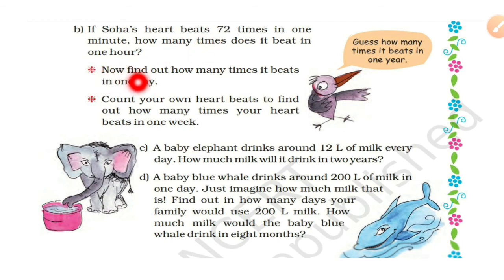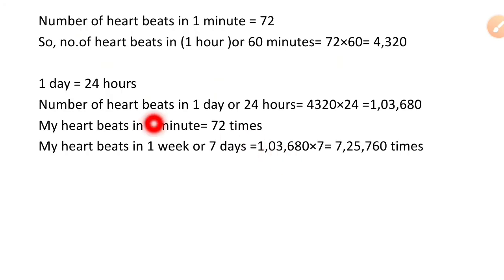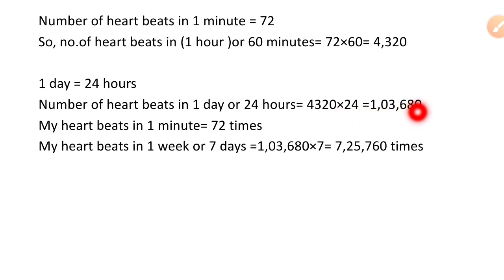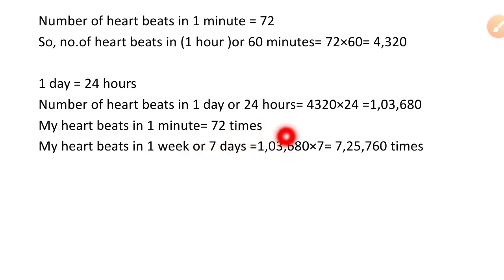Now find out how many times it beats in 1 day. 1 day mein 24 hours hote hain. Number of heartbeats in 1 day: 1 hour ka nikal gaya hai 4,320 times, to 24 se multiply karenge. Uske baad 1 week mein heart beats nikalne hain. Agar 1 minute mein 72 times hai, to 1 week mein 7 days hote hain, to pehle 1 day ka heart beat use karke 7 se multiply karenge. 1 day ke heart beat: 1,03,680.